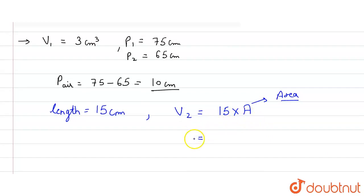Volume 2 is equal to 15 into A. So now, by Boyle's law...